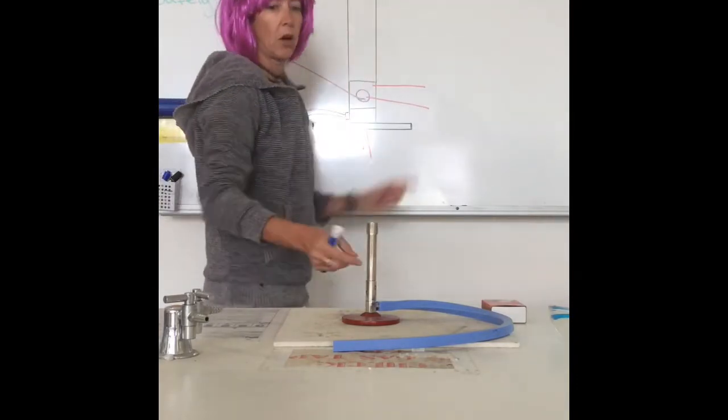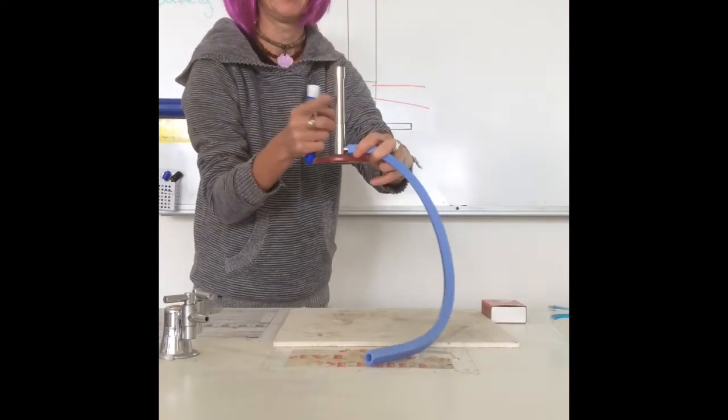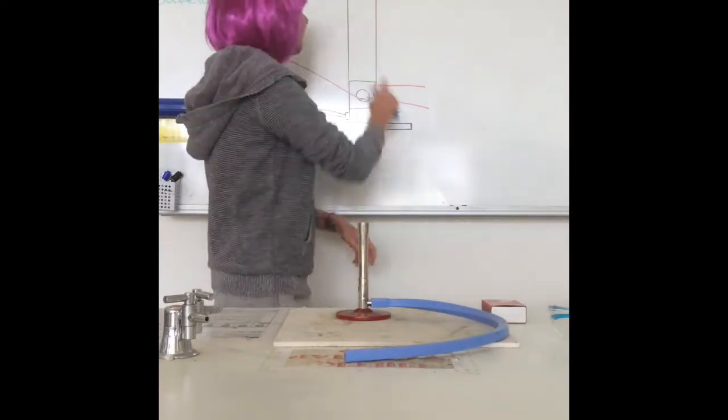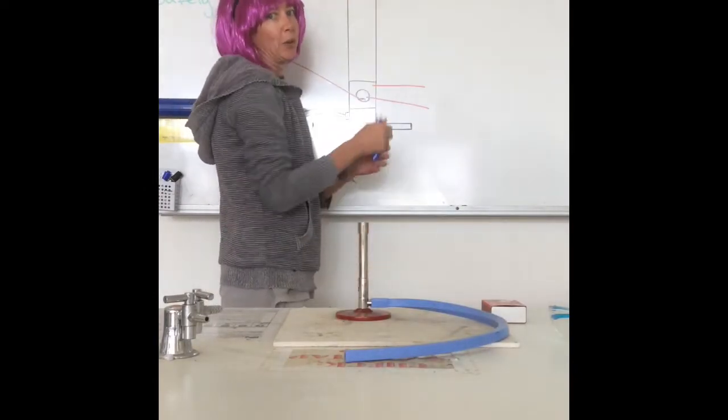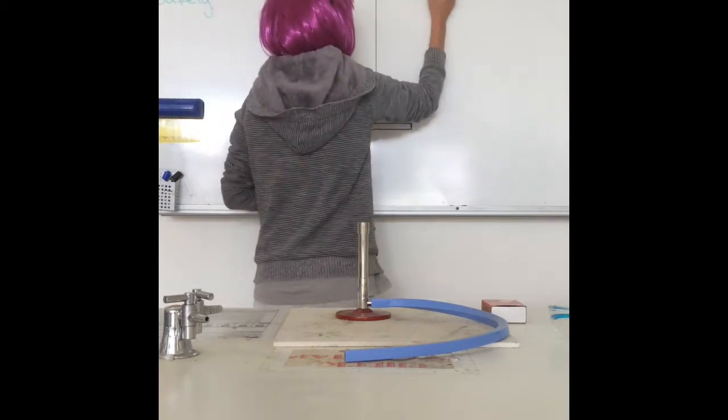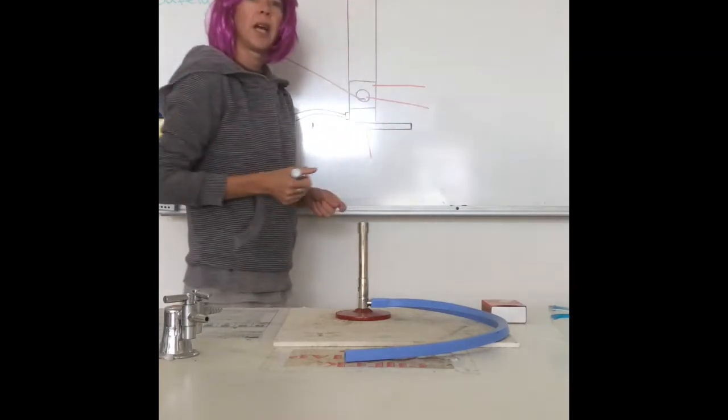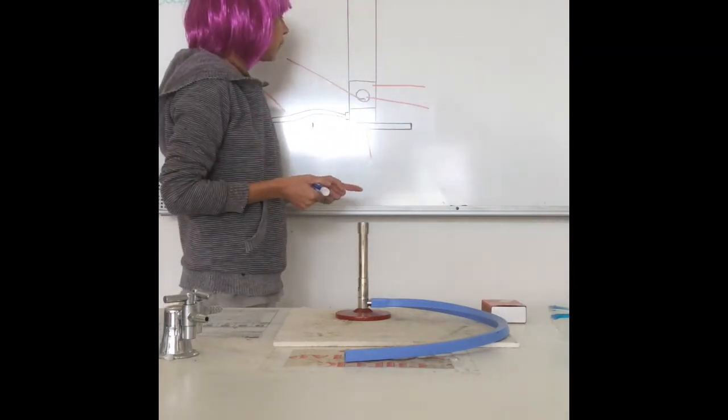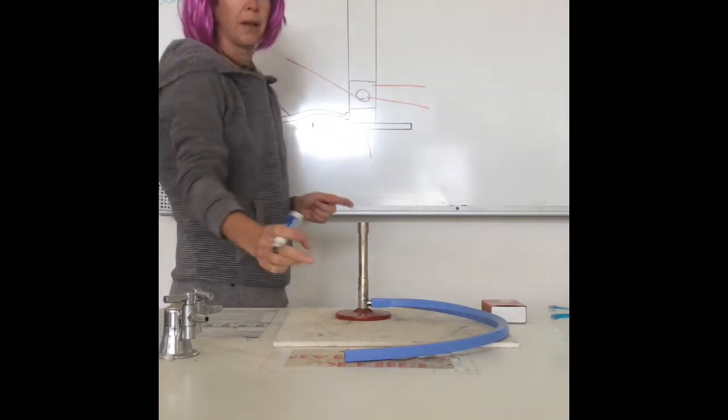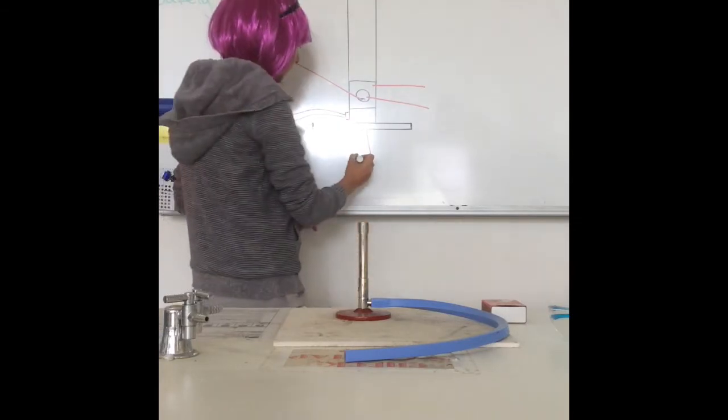I'd like you to have a go at naming the parts of the Bunsen burner as we go through. I'll give you a couple of seconds before I write the answer on the board. We have at the top, the barrel. And at the bottom part, that's the base.